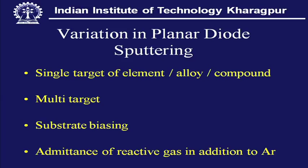Planar diode sputtering can have many variations. It can be a single target machine with an elemental cathode — titanium, aluminium, copper — or an alloy such as silver-copper, nickel-chromium, or titanium-aluminium alloy, or a compound such as aluminium oxide or molybdenum disulphide.